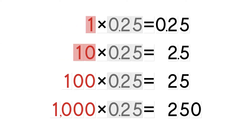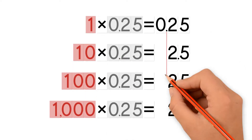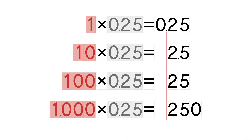The powers of 10 are 1, 10, 100, and 1000. Let's take a look at what happens when you multiply a decimal by powers of 10. When you multiply a factor by 1, the number stays the same. When we multiply a factor by 10, the decimal point moves one place to the right.